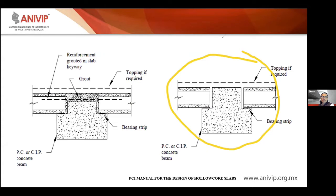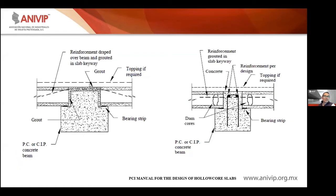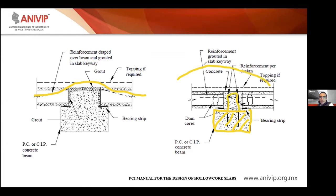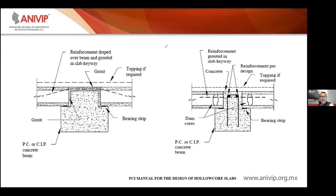Difícilmente encontrarán estas conexiones en zonas sísmicas, pero en algunos puntos del país como la península, Nuevo León, o zonas con poca incidencia sísmica, a lo mejor se podrían tener. Aquí vemos otro tipo de conexión donde se pasan los aceros de lado a lado dentro de la placa alveolar. Una de las conexiones más típicas es donde la trabe —colada en sitio o prefabricada— trae unos estribos desnudos y luego se cuela la conexión.